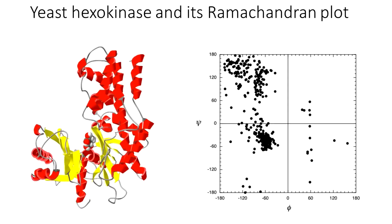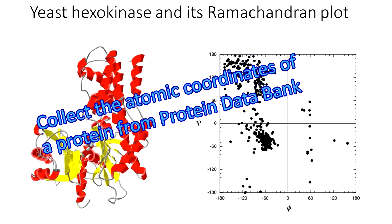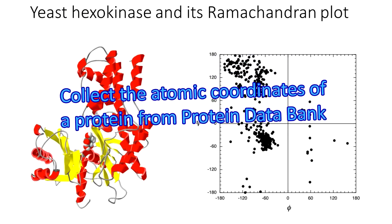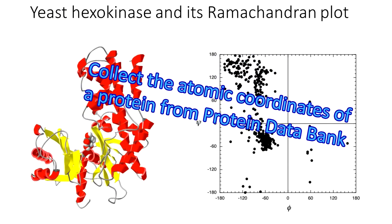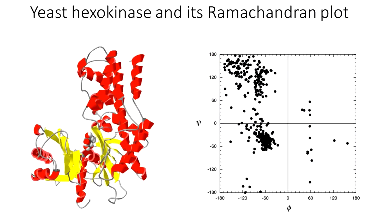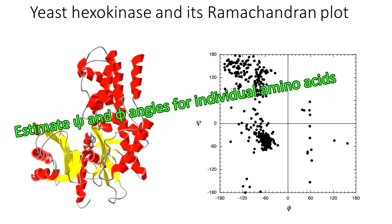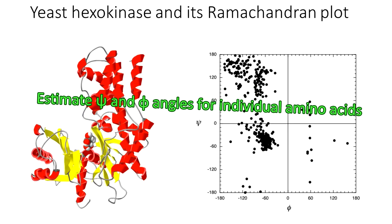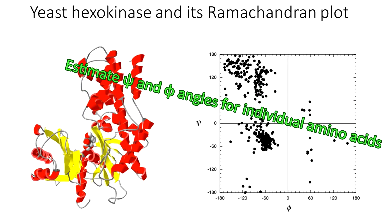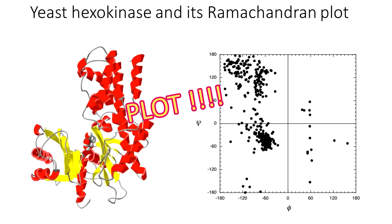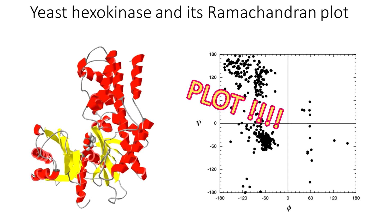The steps of doing so are very simple. We can obtain the atomic coordinates of a protein from the Protein Data Bank. We are going to use yeast hexokinase. Using its structure, we can estimate the phi and psi angles for individual amino acids and then we can plot.